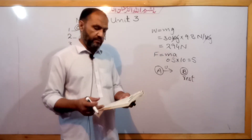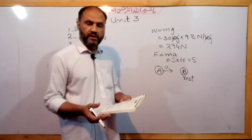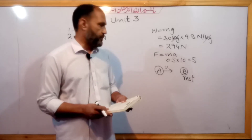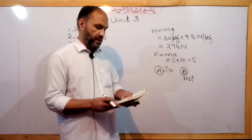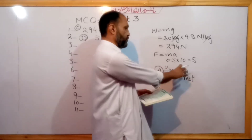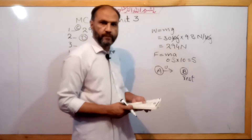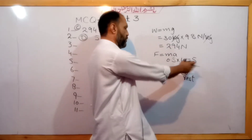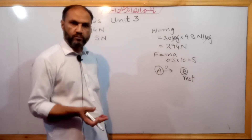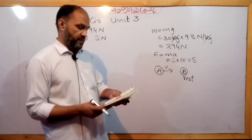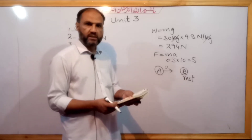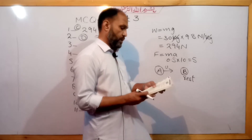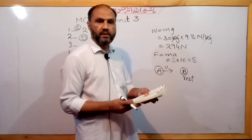Option A: Ball A comes to rest and ball B starts moving — that is possible. Both balls move in the same direction — that is also possible. Ball B starts moving in the opposite direction is possible. The option that is not possible is D: both balls come to rest, because momentum would not be conserved.